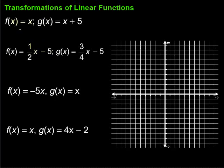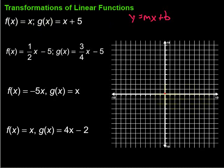This first one, we're going to start by graphing f of x, which is just equal to x. Remember, slope-intercept form uses y equals mx plus b. There's no b, so we start at the origin, 0, 0, on the y-axis. Then I look for the slope — the coefficient of the x term — which in this case is 1.